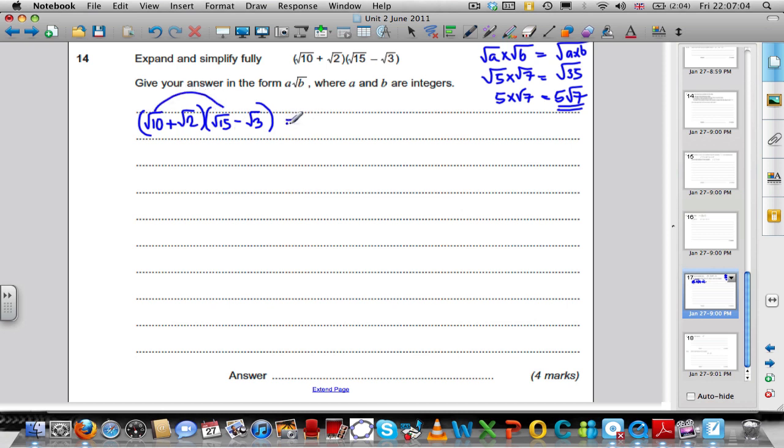Root 10 times root 15 is the square root of 10 times 15, which is the square root of 150. Root 10 multiplied by negative root 3 is negative root 10 times 3, which is 30. Then we do this one. Positive root 2 times positive root 15 is positive root 30. And positive root 2 times negative root 3 is negative root 6.